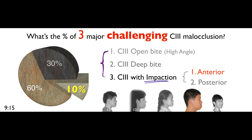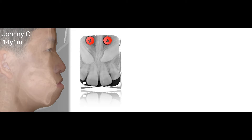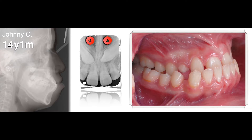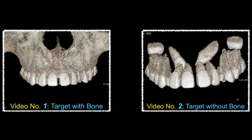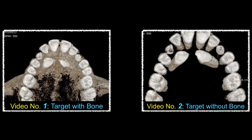So finally we got to the theory, which is Class 3 with impaction. Let's start with anterior. Suppose you have bilateral deep impacted cuspid — how would you solve the problem? It's Class 3 with constricted arch. How would you solve this problem?